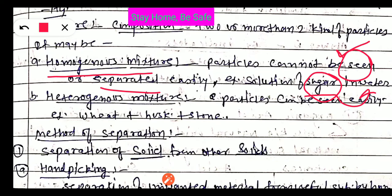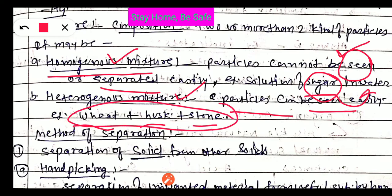That's why a sugar-water mixture is called a homogeneous mixture. The second type is a heterogeneous mixture — the particles can be seen easily and we can separate them easily. For example, wheat mixed with husk and stone is a heterogeneous mixture because we can easily see and separate the wheat, husk, and stone. Husk is the upper covering part of a seed grain.